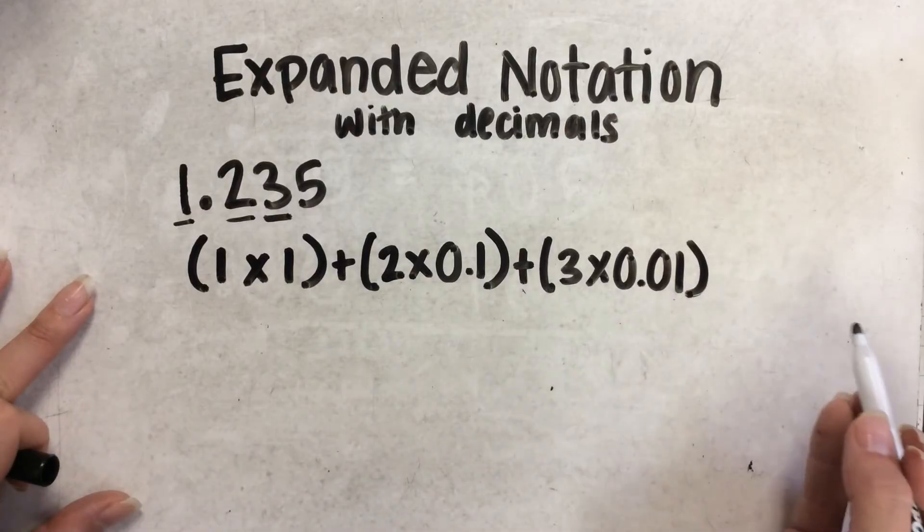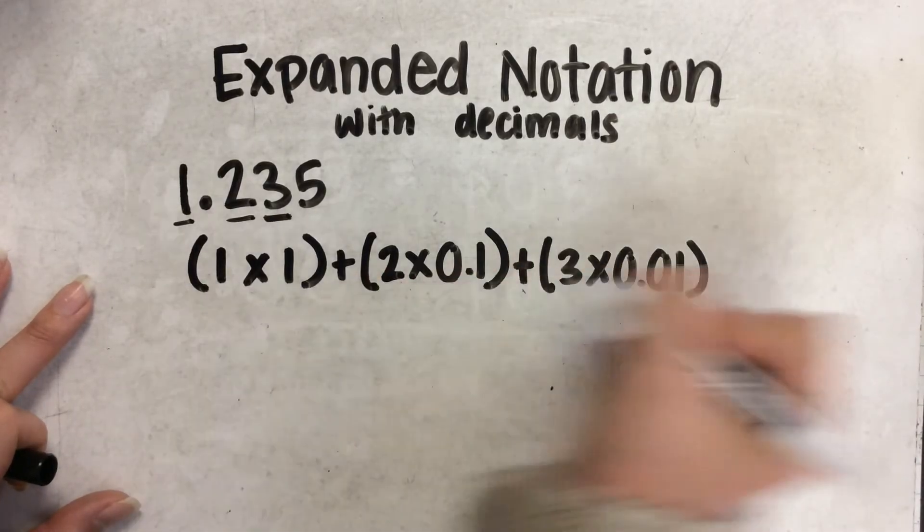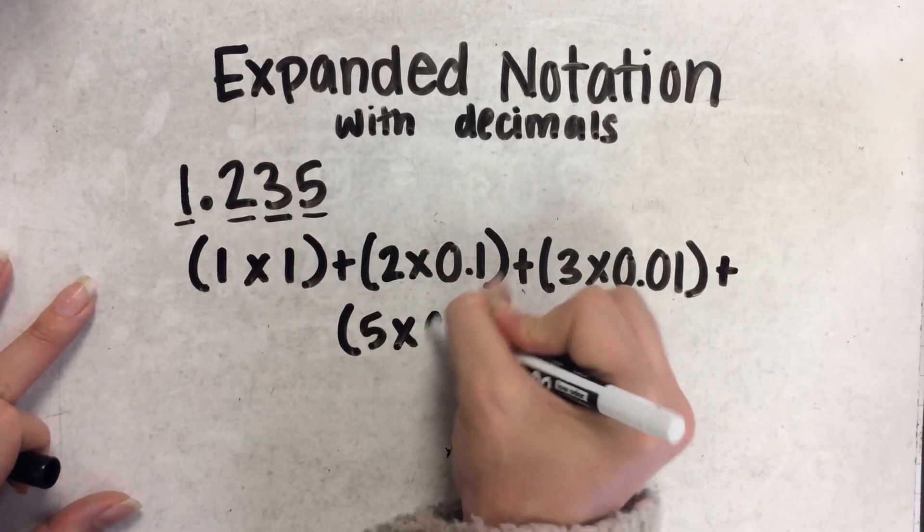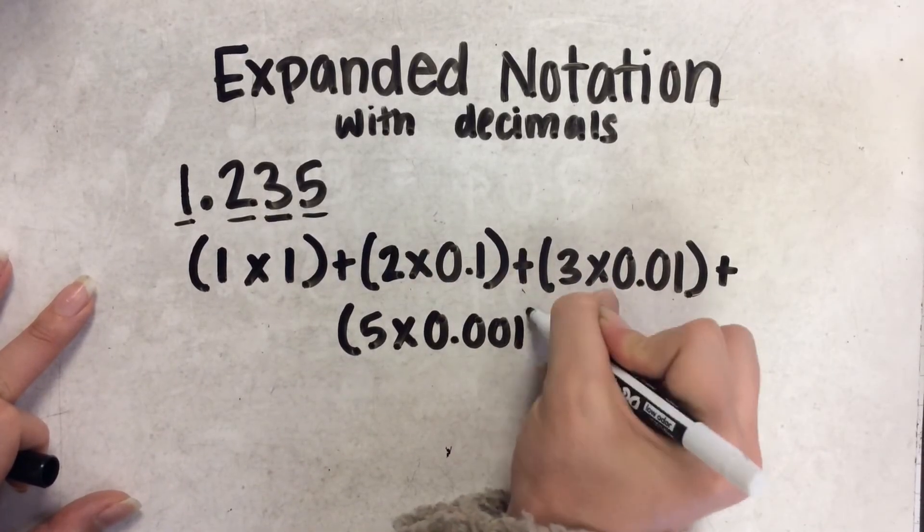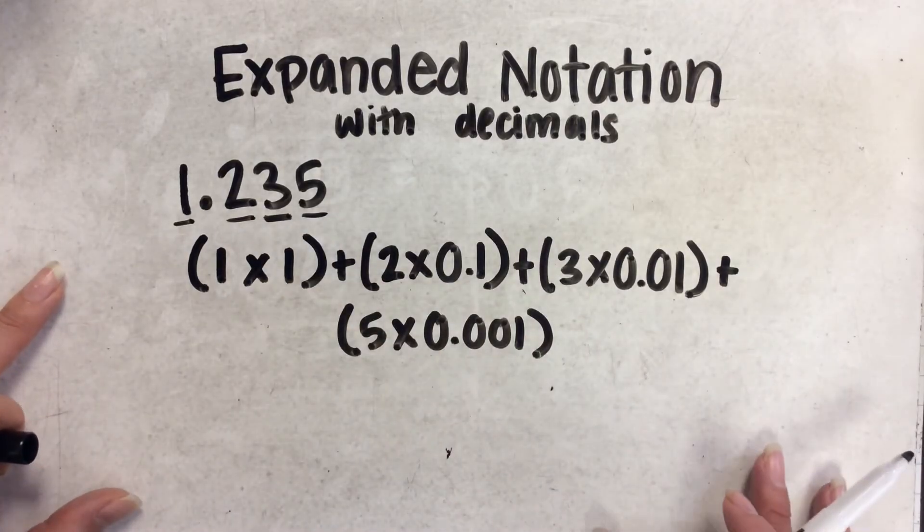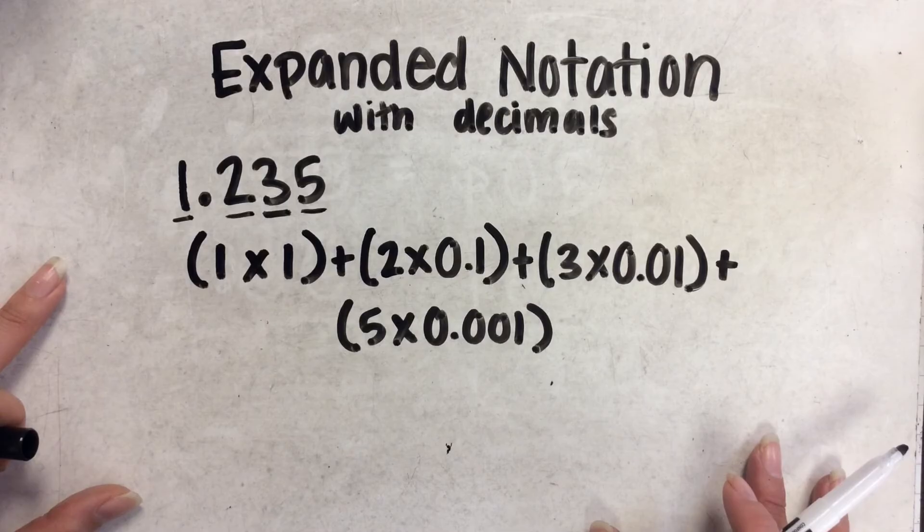And then, it's okay if you run out of room and you just do plus, and then you write the next one, 5 times 1 thousandth. Because the 5 is in the thousandths place. Now, we can do this in a different way and use fractions.